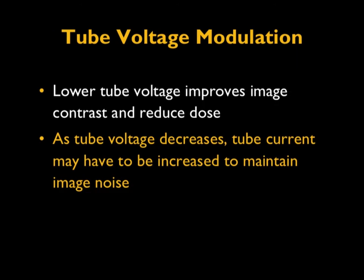Tube voltage modulation can be understood as follows. Unlike tube current modulation, tube voltage modulation is not done automatically by the scanner. The user can select tube voltage based on patient demographic size and so forth. Because lower tube voltage improves image contrast and reduces dose, however, if you decrease the tube voltage too much, one has to increase tube current to maintain image noise.